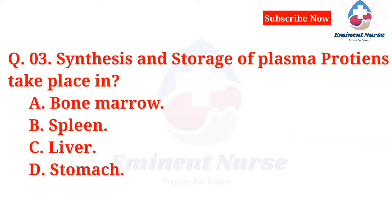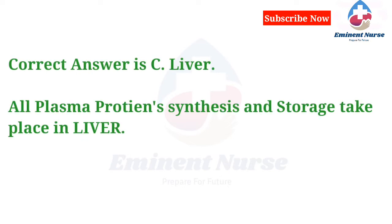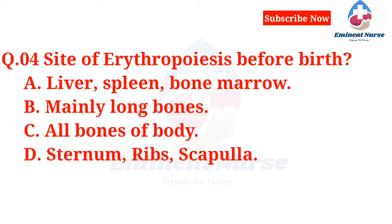Synthesis and storage of plasma proteins take place in: A. Liver, Spleen, Bone Marrow. B. Mainly long bones. C. All bones of body. D. Sternum, Ribs, Scapula.